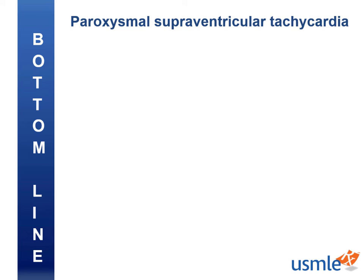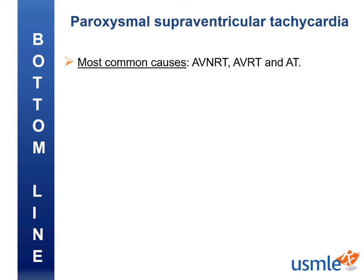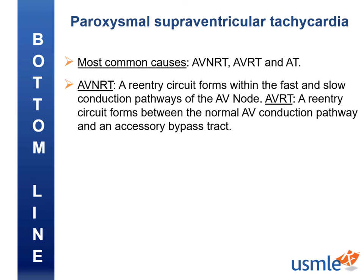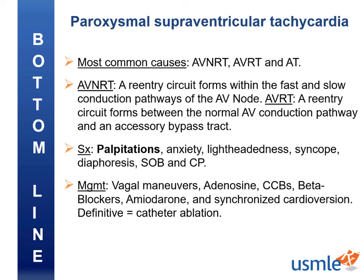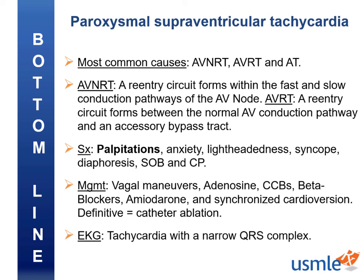To summarize: the most common causes of PSVT are AVNRT, AVRT, and atrial tachycardia. In AVNRT, the reentry circuit forms within the fast and slow conduction pathways within the AV node. In AVRT, the circuit forms between the normal AV node pathway and an accessory bypass track. Symptoms include palpitations, anxiety, lightheadedness, syncope, diaphoresis, shortness of breath, and chest pain. Management includes vagal maneuvers, IV adenosine, and other AV-slowing drugs; if those fail or the patient is unstable, use synchronized cardioversion. Definitive management is catheter ablation. Always remember: the EKG shows tachycardia with a narrow QRS complex.